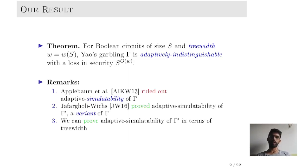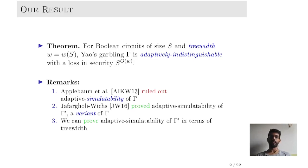A few remarks regarding our result are in order. Firstly, Applebaum et al. ruled out adaptive simulatability of yaw-scarbling, and as a consequence our result is the best possible result one could hope for. Secondly, Jafargholi et al. proved adaptive simulatability of a closed variant of yaw-scarbling which we denote by gamma prime, and we can prove adaptive simulatability of this variant in terms of tree-width as well. So our results can basically be tuned slightly to achieve adaptive simulatability of gamma prime.